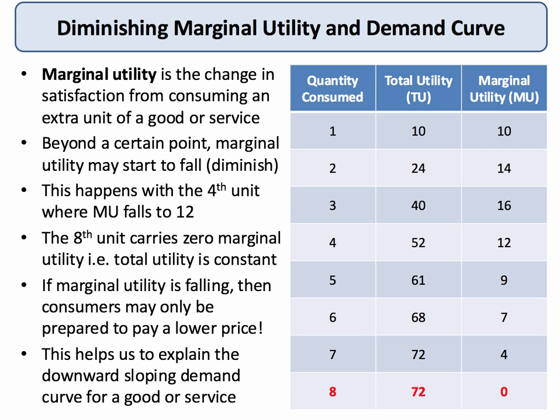Diminishing marginal utility ultimately affects our willingness to pay for a good or service. For a single product, the condition for maximizing total utility — assuming your budget allows you to reach this point — is where marginal utility is zero. In the example, as quantity increases, marginal utility initially rises (10, 14, 16) but beyond the third unit it starts to diminish, continuing to fall until the eighth unit where there is no change in total utility, so marginal utility is zero. You maximize total utility when marginal utility is zero.